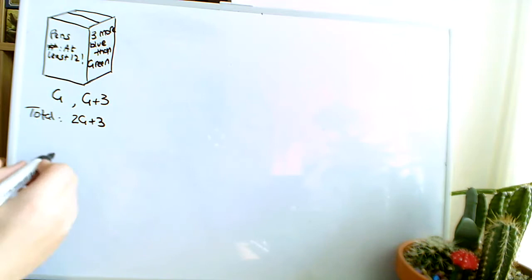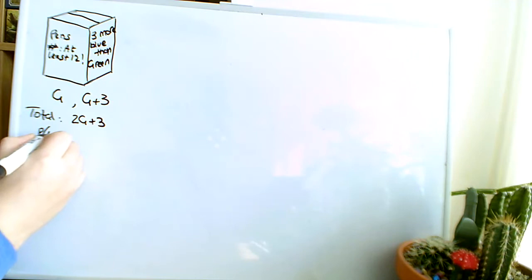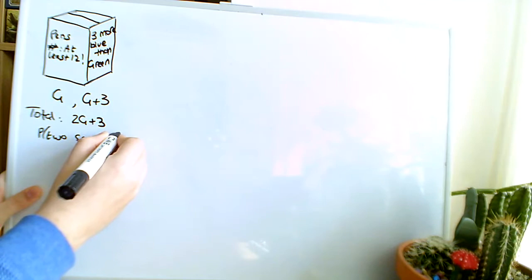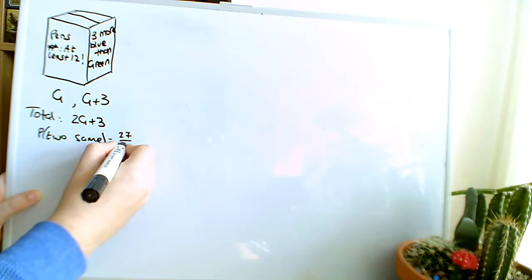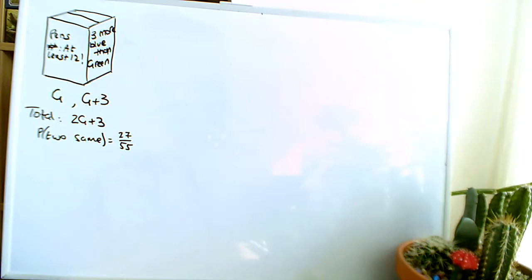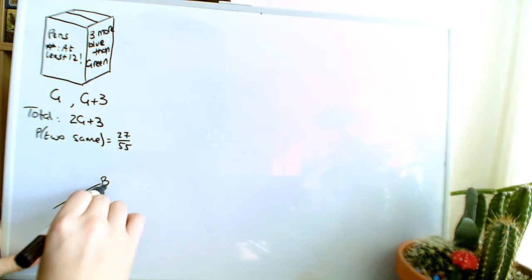Now, we're told that the probability of 2 the same is equal to 27 over 55. So this is going to be a tree diagram question, where we pick a pen out of the box, and then pick a second pen, so we've got first pick,